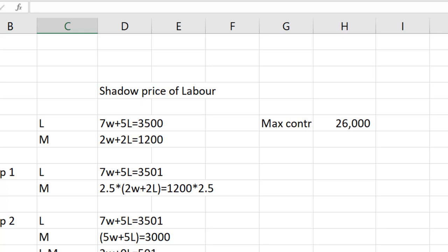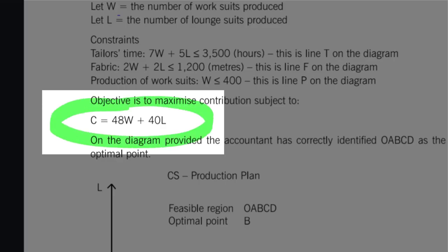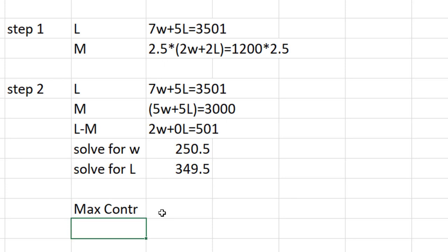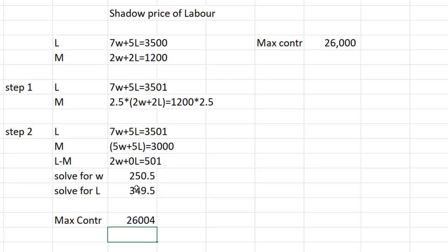Let's go back to the question. Let's grab the contribution equation, and we see right here the contribution equation, 48W plus 40L. So, the contribution of W is 48. The contribution of the L is 40. Let's bring that back to our spreadsheet. Maximum contribution. That will be equal to 48, multiplied by W, plus 40, multiplied by L. And, we got 26,004. So, that's the maximum contribution from the existing resources.